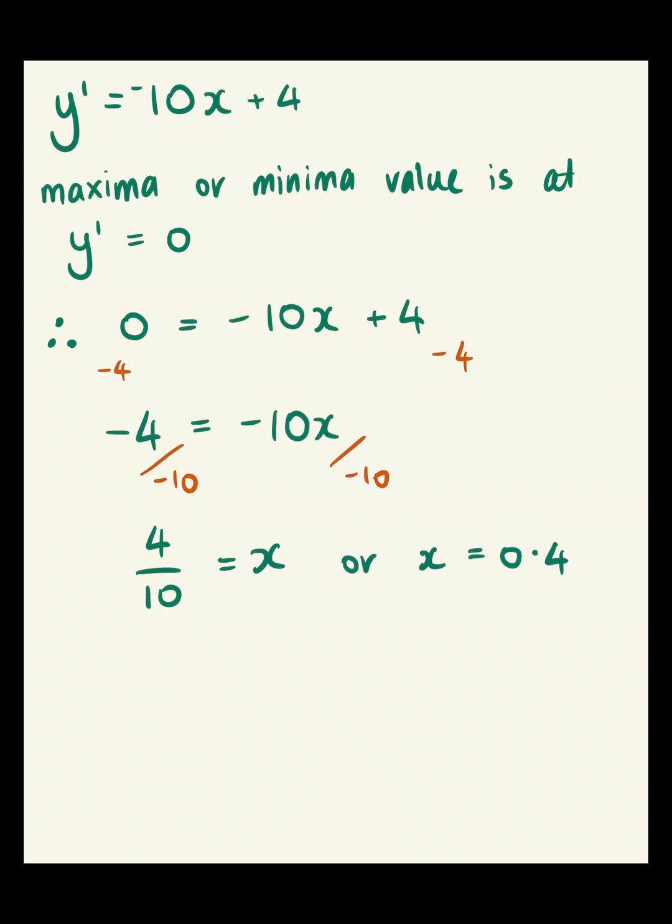That's going to leave us with 4 over 10, because the two negatives will cancel out, equals x. Because the two negative 10s will equal 1, and if we multiply that by 1, that's just going to give us x. So it would be 4 over 10, or 2 over 5, or simply x equals 0.4.